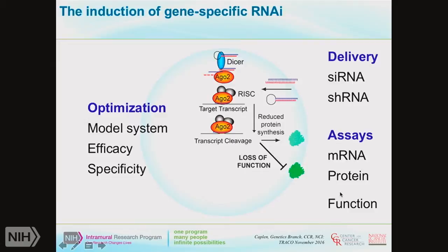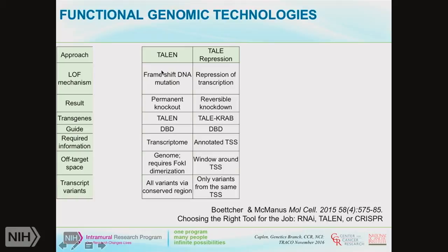TALENs are a very different approach. These induce frameshift mutations at a DNA level, which can result in a permanent knockdown. They use DNA binding domains as guides. You need the transcriptome, but at the genome level you require the dimerization of two enzymes, and this can cause issues in terms of off-target effects. You can target all variants if there's a conserved region. TALENs make use of synthetic proteins based on proteins secreted by Xanthomonas, a gram-negative bacteria that can infect a wide variety of plant species.